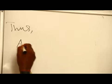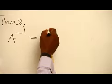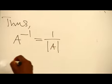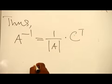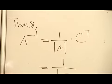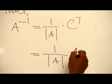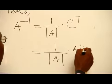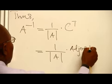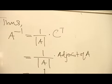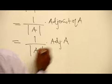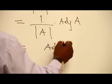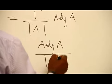First, we write that the inverse of A is equal to 1 over the determinant of A times C transpose, which is equivalent to 1 over the determinant of A times the adjoint of A. We write it as ADJ(A) all over the determinant of A.